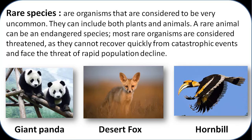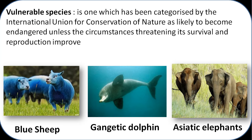Rare species are organisms which are very uncommon and are always considered endangered as they cannot recover from catastrophic events. Vulnerable species is the category defined by IUCN as likely to become endangered unless the circumstances threatening its survival and reproduction improve.